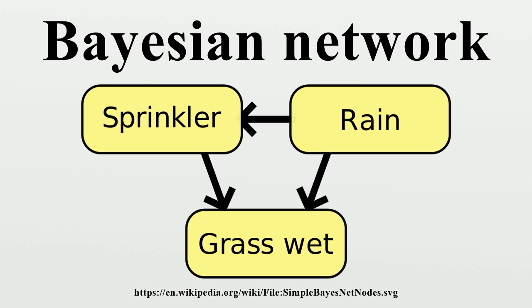On the other hand, if we wish to answer an interventional question — what is the probability that it would rain, given that we wet the grass — the answer would be governed by the post-intervention joint distribution function obtained by removing the factor from the pre-intervention distribution. As expected, the probability of rain is unaffected by the action. Moreover, if we wish to predict the impact of turning the sprinkler on, we have with the term removed, showing that the action has an effect on the grass but not on the rain.